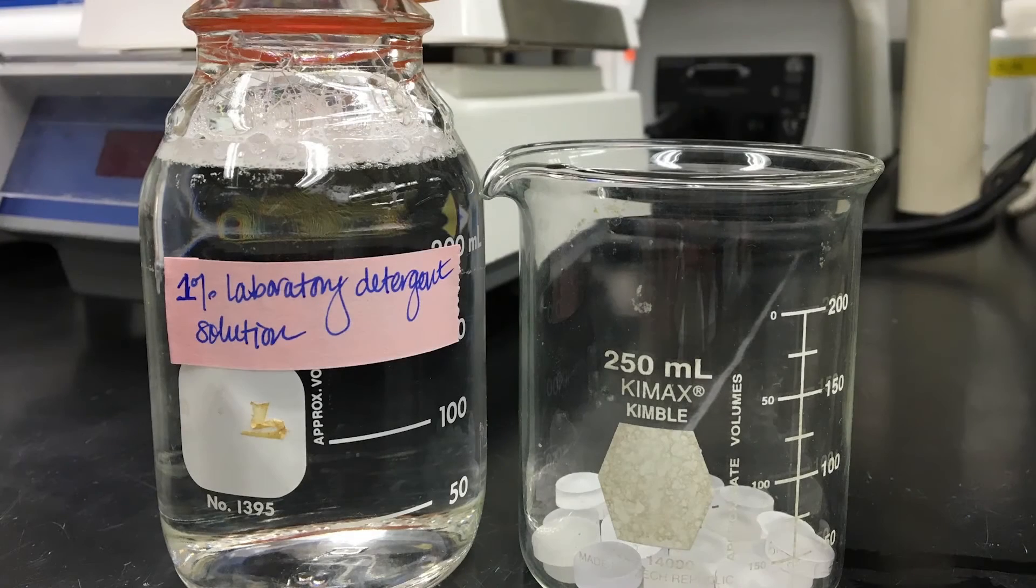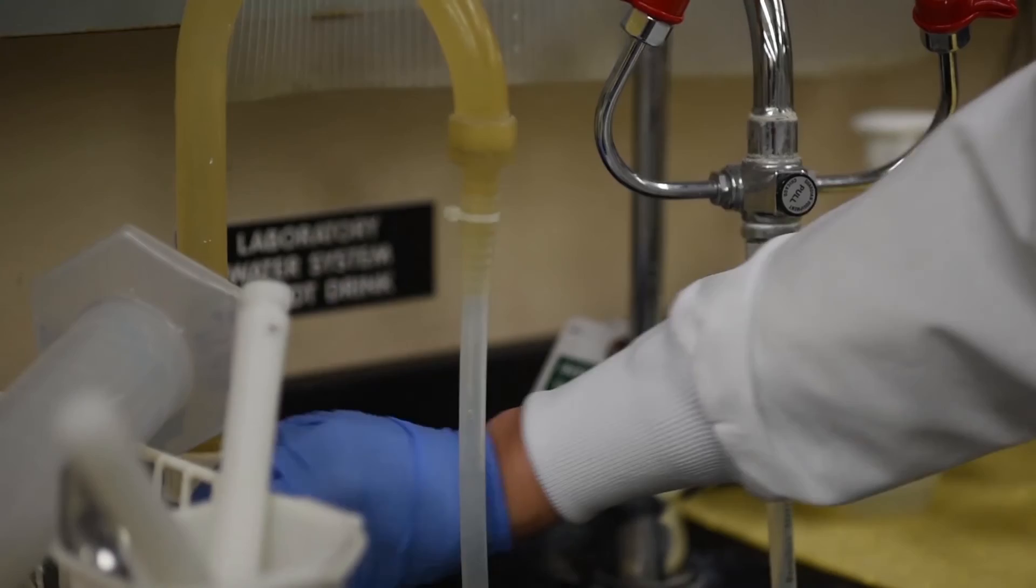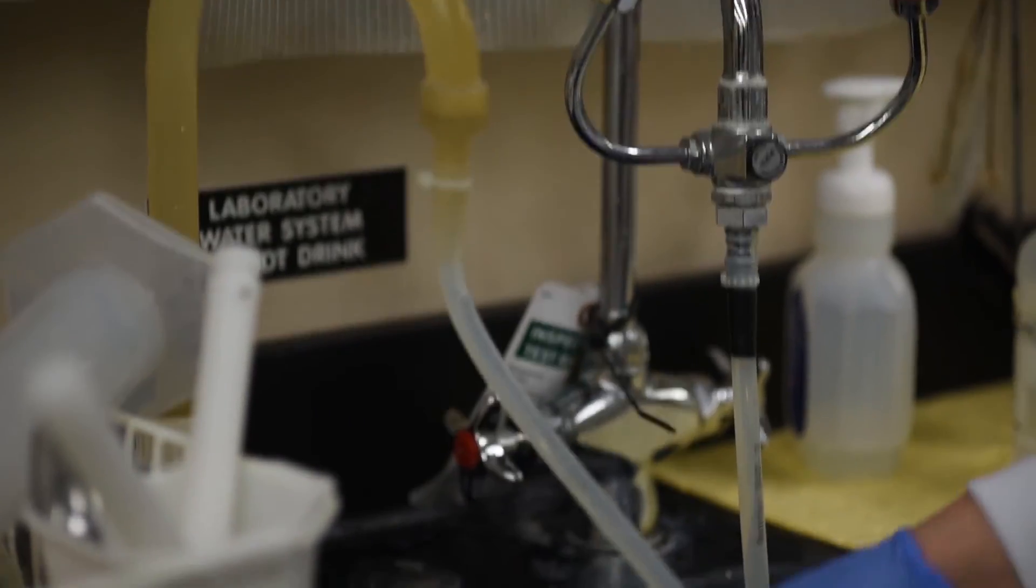For other coupon materials, polycarbonate for example, place all coupons in a beaker with 1% laboratory detergent solution. Sonicate, rinse and dry as described earlier.